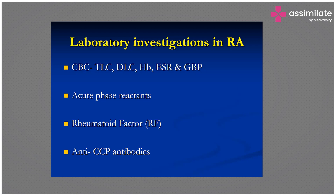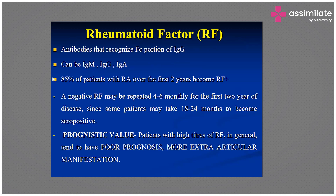Why would you write gabapentin peptide? Please don't Google. The next things are acute phase reactants, rheumatoid factors, and anti-CCP antibodies.